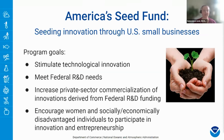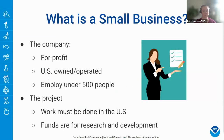A third goal is to increase private sector commercialization of innovations derived from federal R&D funding, and there is a broad program goal to encourage women and socially or economically disadvantaged individuals to participate in innovation and entrepreneurship. The STTR program additionally aims to foster technology transfer through cooperative research and development between small businesses and research institutions. To qualify, a company must be for-profit, U.S. owned and operated, and employ under 500 people.